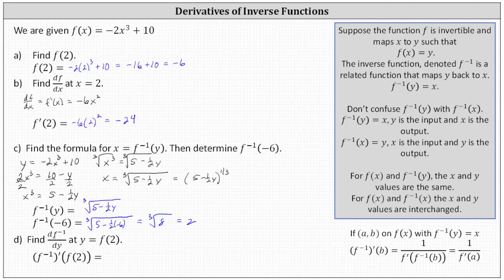For part d, we're asked to find df inverse dy at y equals f of two. We'll use the fact that derivative function values — slopes of tangent lines to functions and inverse functions — are reciprocals at corresponding points. So df inverse dy at y equals f of two can be expressed as f inverse prime of f of two. We know f of two from part a is equal to negative six, so let's write this as f inverse prime of negative six.